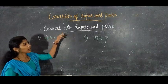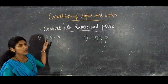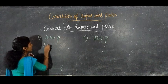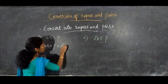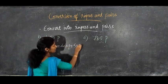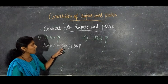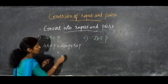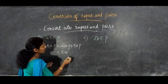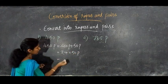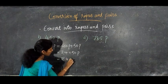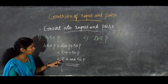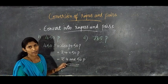The last topic: convert into rupees and paisa. First question — convert 450 paisa into rupees and paisa. We can write 450 paisa as 400 paisa plus 50 paisa. Converting 400 paisa to rupees by removing 2 zeros gives rupees 4. So 450 paisa equals 4 rupees and 50 paisa.